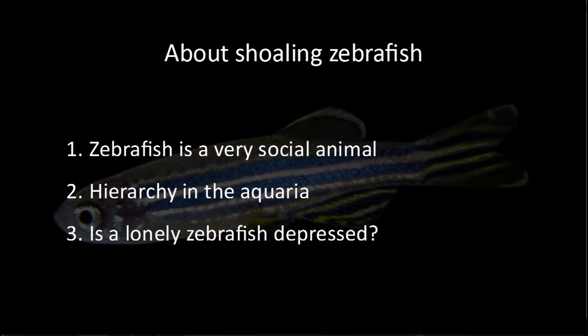Some environmental conditions are also very important when you prepare a zebrafish social behavior experiment. For example, oxygen level — because hypoxia can absolutely influence your data — and also the temperature of the aquaria. Another important point: a lonely zebrafish is depressed, based on our observations.